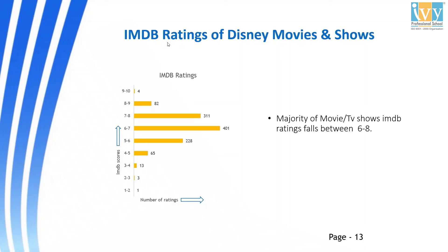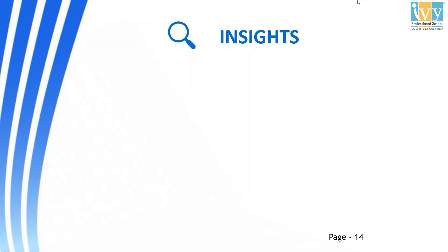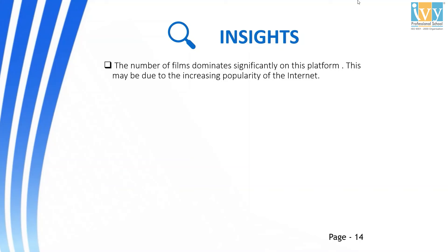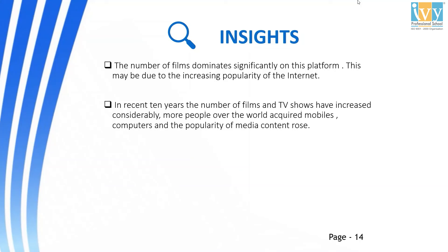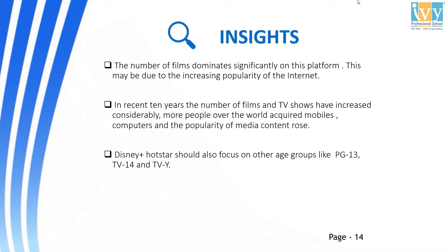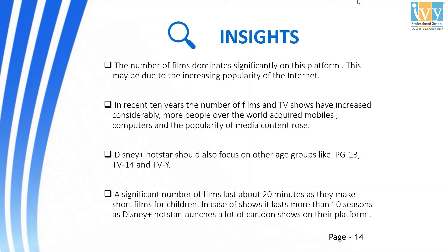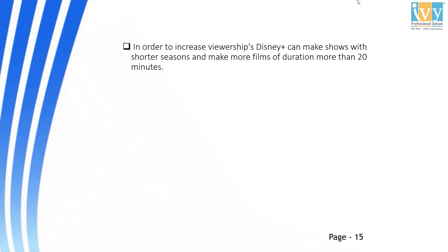The number of films dominates significantly on this platform, likely due to the increasing popularity of the internet. In the recent 10 years, the number of films and TV shows have increased considerably as more people worldwide acquired mobiles and computers. Disney Plus Hotstar should also focus on other age groups like PG-13, TV-14, and TV-Y. A significant number of films last about 20 minutes as they make short films for children. In case of shows, it lasts more than 10 seasons as Disney Plus Hotstar launches a lot of cartoon shows. To increase viewership, Disney Plus can make shows with shorter seasons and more films of duration more than 20 minutes.